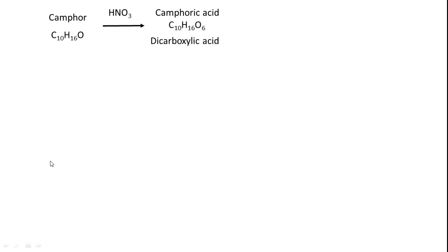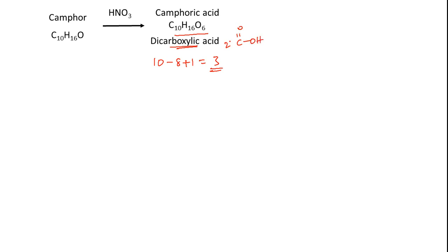Further, the structure of camphor was elucidated via sequential degradation. In the first step, camphor was oxidized with nitric acid to obtain camphoric acid (molecular formula C10H16O4). Calculating the number of unsaturations: 10 − 8 + 1 = 3. Camphoric acid is a dicarboxylic acid, accounting for 2 unsaturations, leaving 1 unsaturation due to a remaining ring.